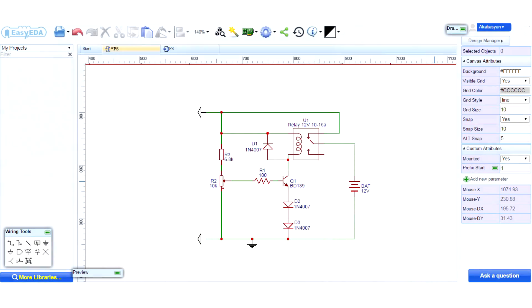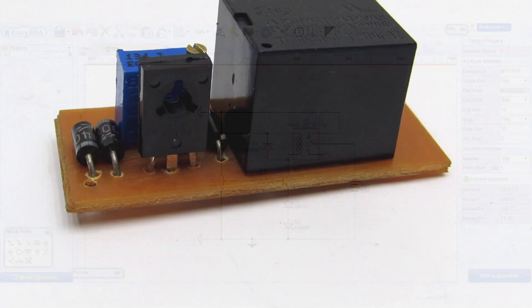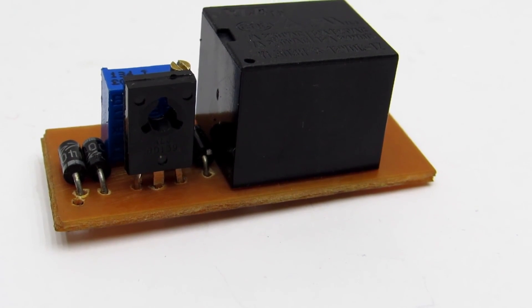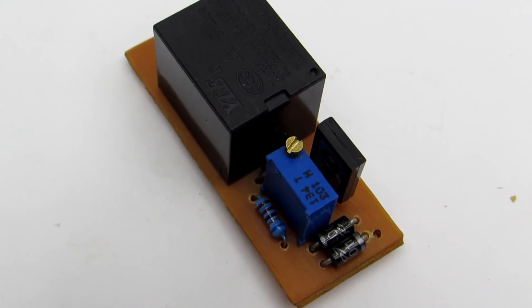But the scheme has several disadvantages. First is low noise immunity because of which possible false operating of relay. Second is low accuracy due to lack of voltage reference and other stabilizing components.